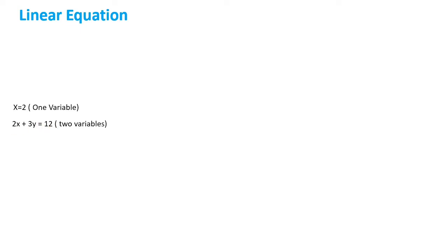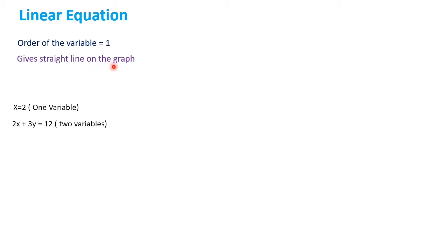The first condition we need to satisfy for a linear equation is that the order of the variable must be equal to 1. Order means the highest power. When we check x here, the highest power is 1. For x and y in 2x + 3y = 12, the power is also 1 for each. So the order of the variable should be 1, and it gives a straight line on the graph.